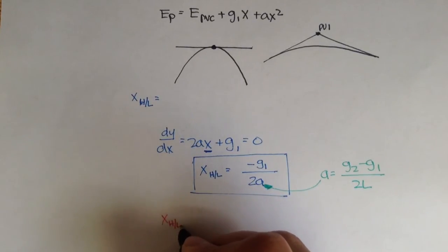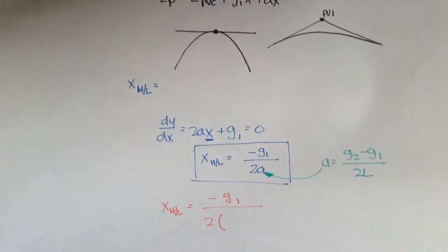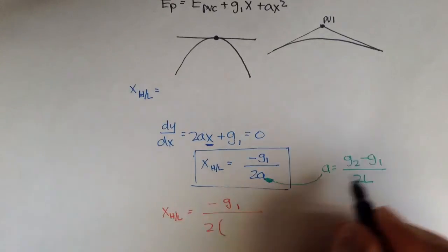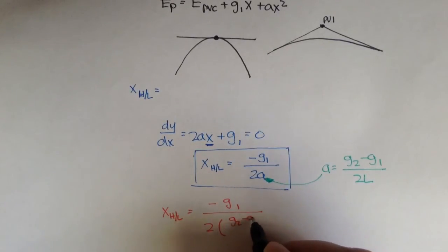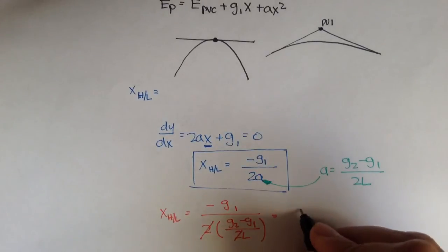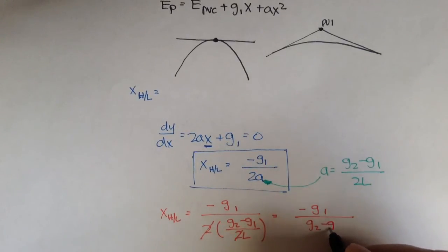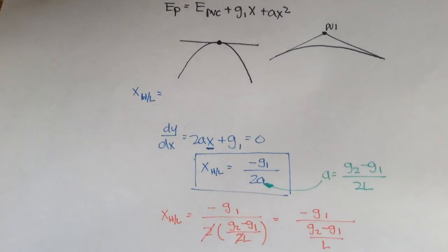let's do it in red. x high low is equal to negative g1 divided by 2 times a, which is g2 minus g1 over 2L, right? You see that these 2s cancel out, and we're left with negative g1 over g2 minus g1.